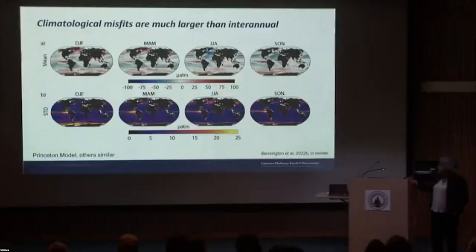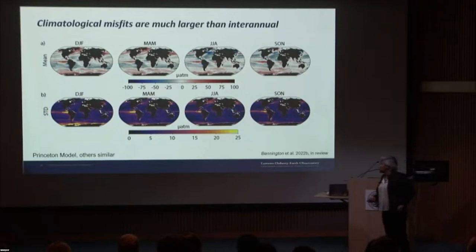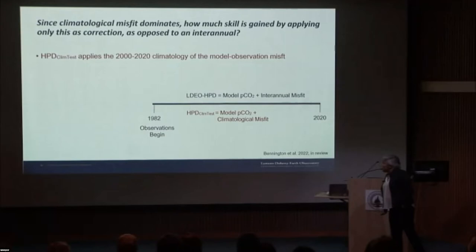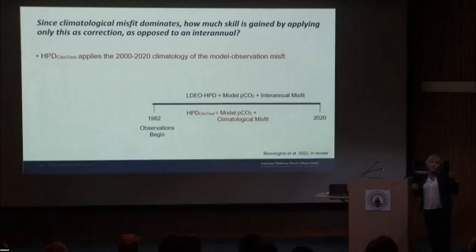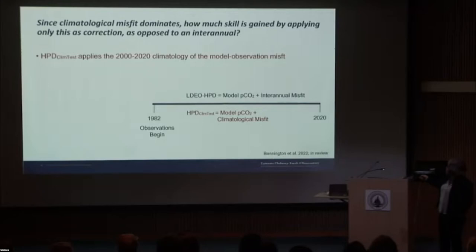Here's the Princeton model comparison: climatological misfits range −100 to +100 µatm, while the standard deviation across years is only 0 to 25 µatm. The models need big climatological corrections, but not such huge interannual corrections — mostly under 5 µatm across the ocean. So, if climatology is most of the answer, what if we only correct models with that climatology? For the period 1982–2020 where I have independent observations, I'll build both my main reconstruction — model plus interannual misfits — and a test using model plus just the climatological misfits, to see how much of the answer comes from climatology.